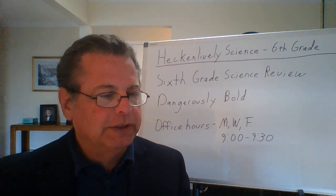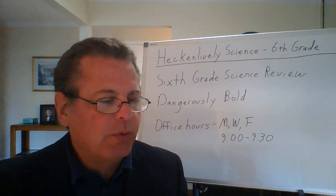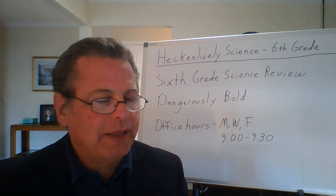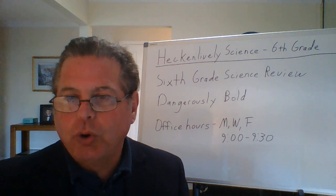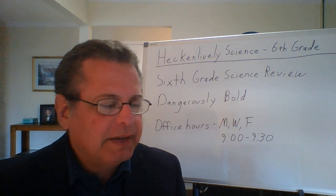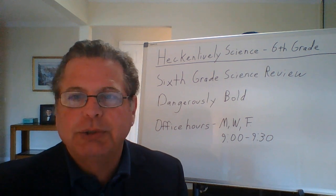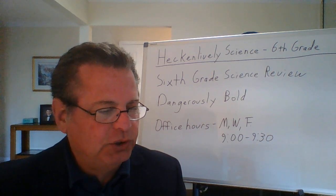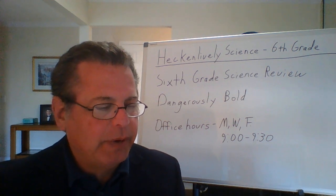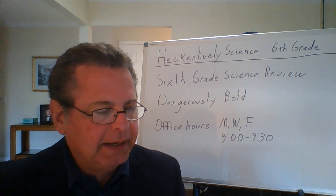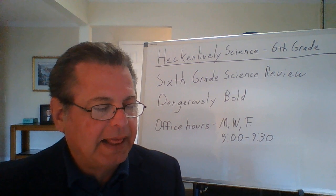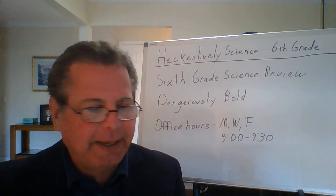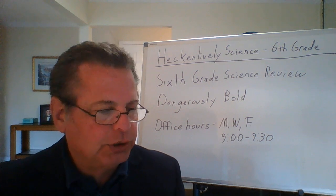Four: how do ocean currents affect climate? Depending on whether it is a cold current or a warm current, the current will either cause the temperature to be warmer or colder than it would be normally. Five: what three countries emit the largest amount of carbon dioxide? That would be China, India, and the United States. Six: why does it rain more at night than during the day? Because it is colder at night, that tends to push the water molecules closer together because they have less thermal energy and they condense into rain droplets.